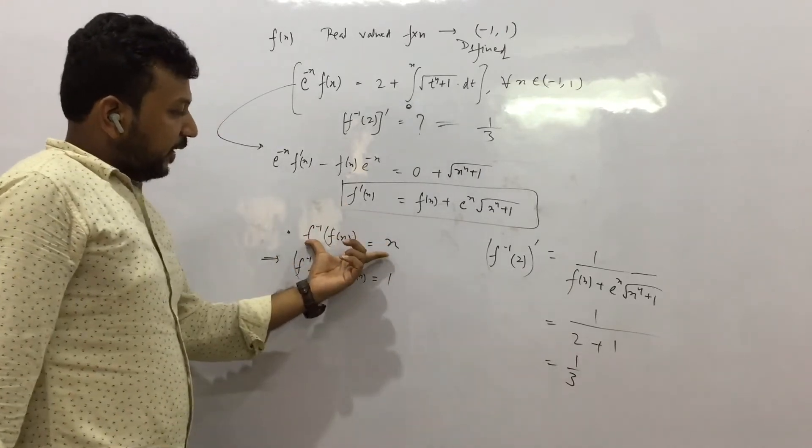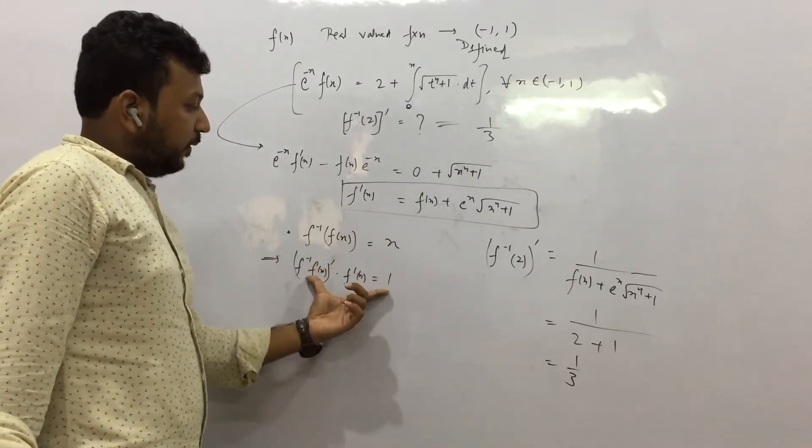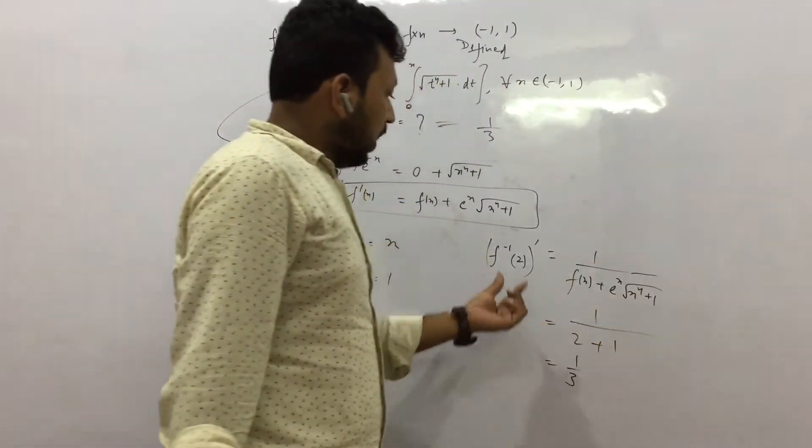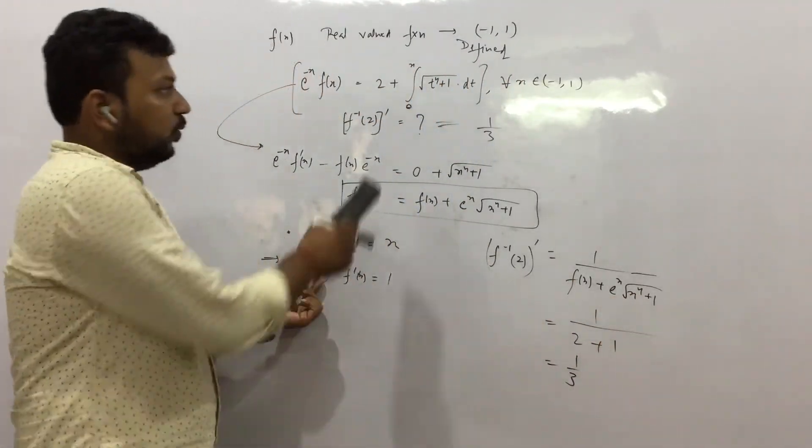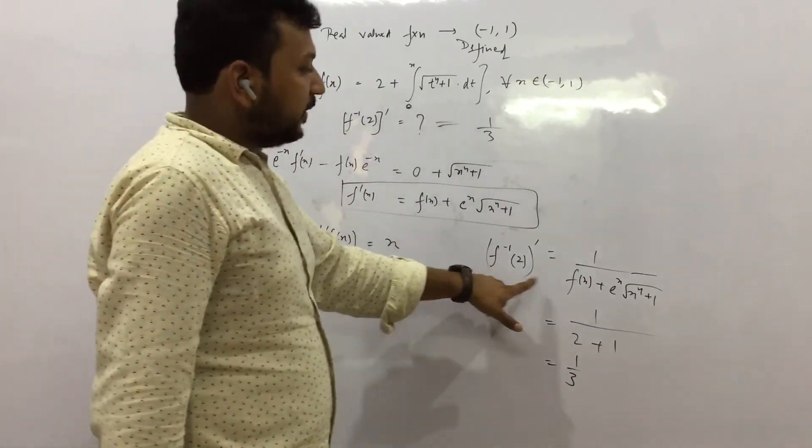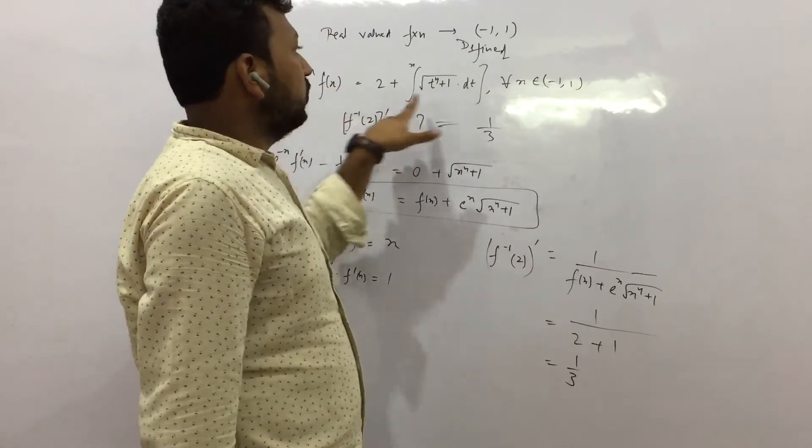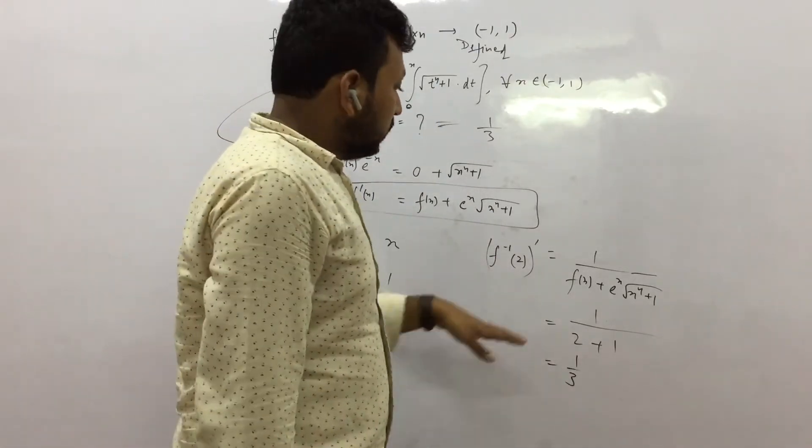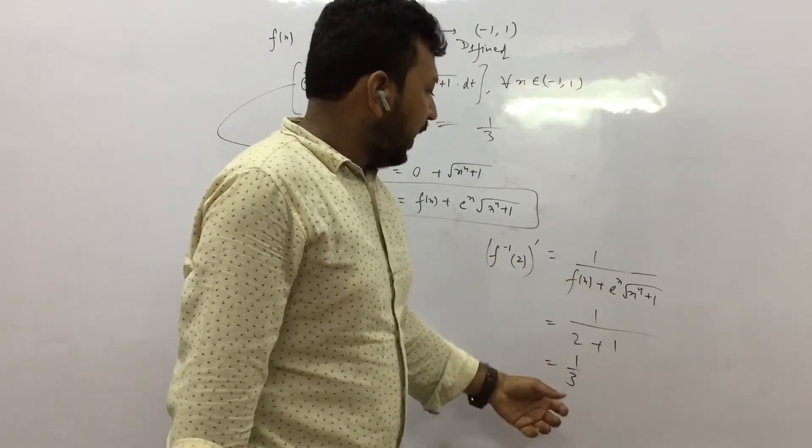This is by definition. I did the derivative, and I put the value of f dash x here. I have this expression. Now f(x) equals 2, because that is what I wanted to find out. f(x) equals 2 at x equals 0, I checked from this expression.